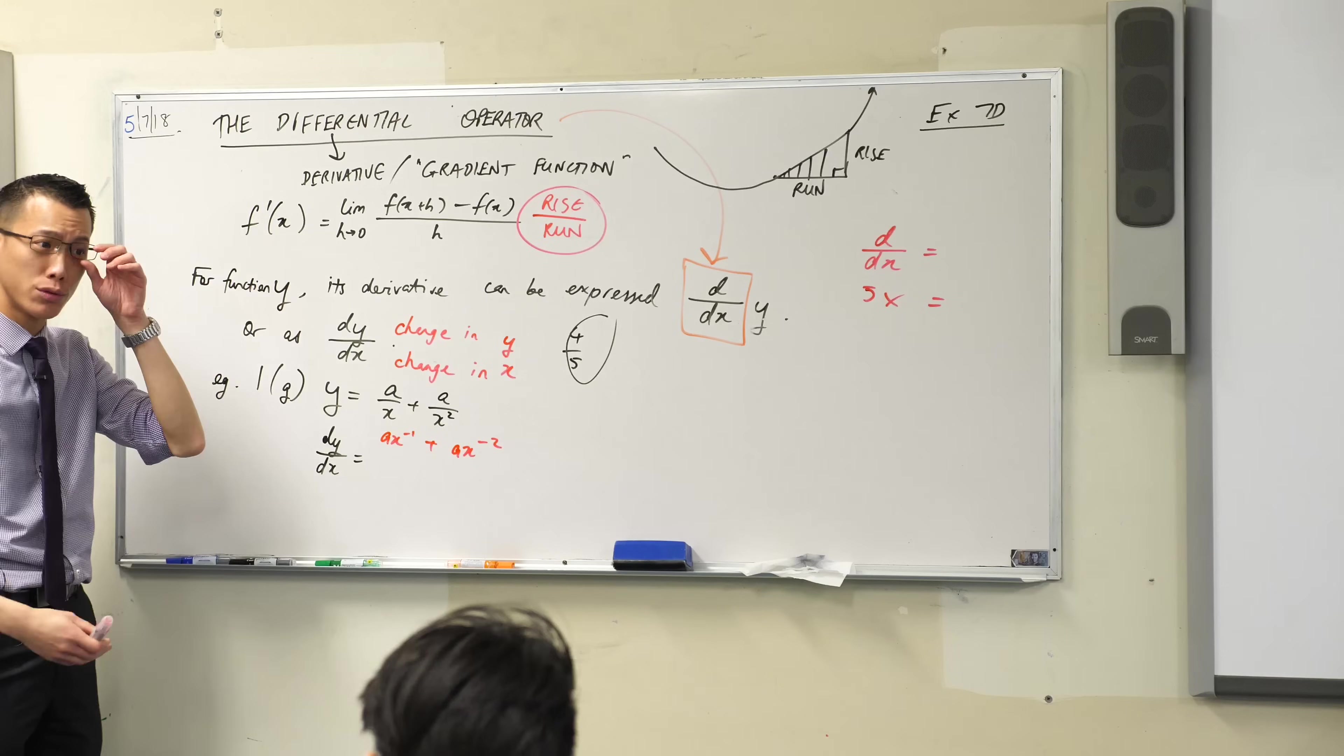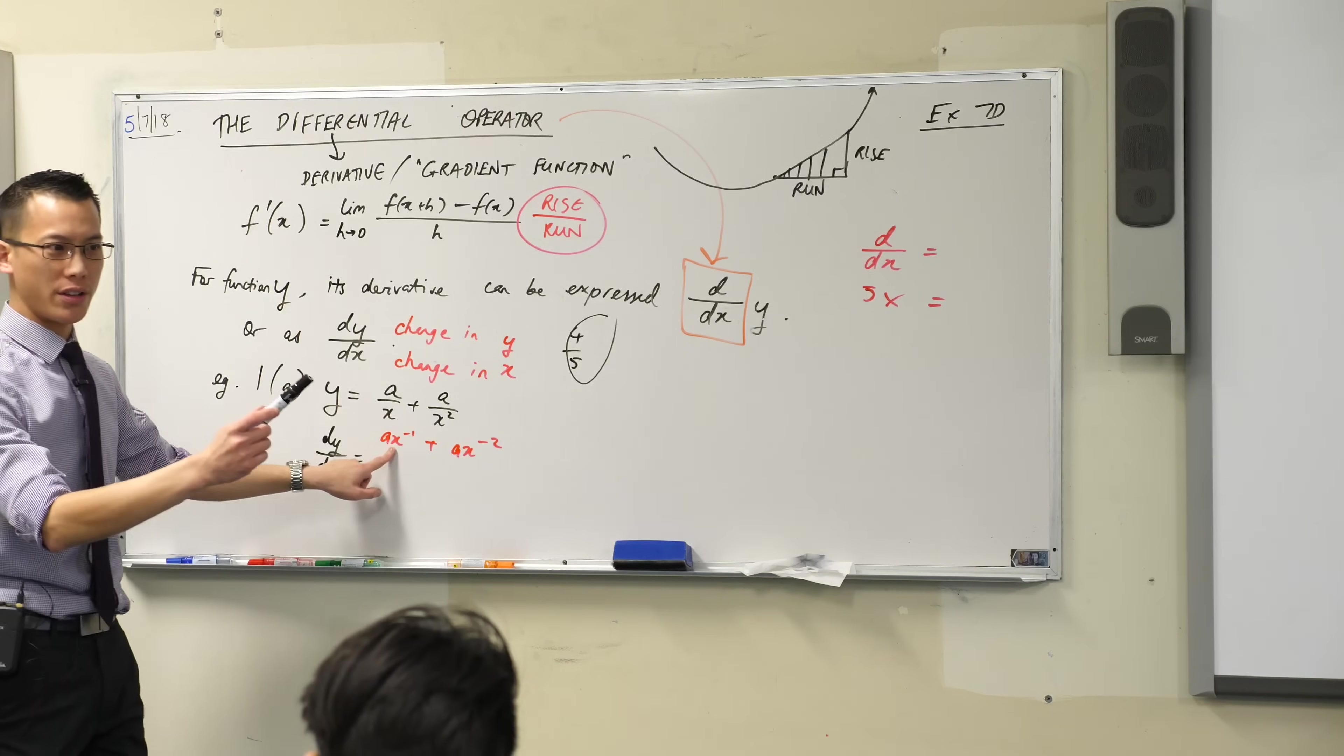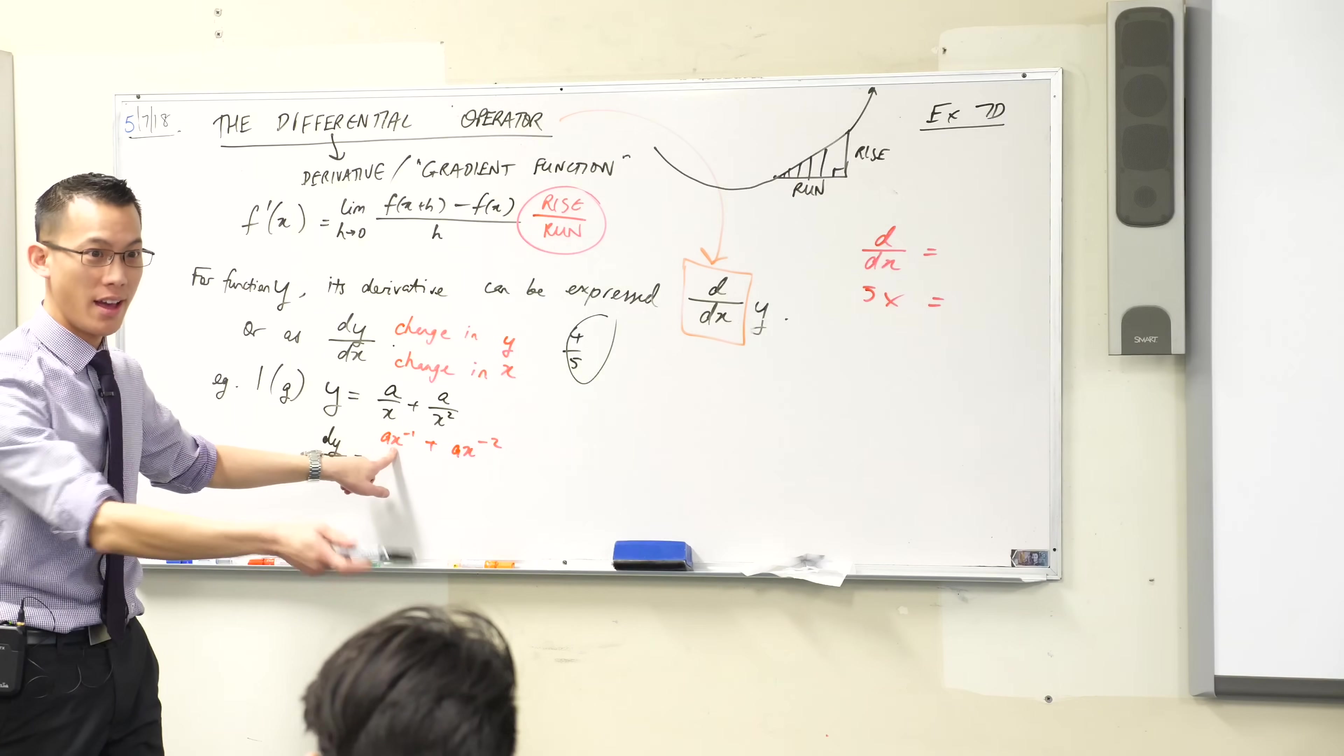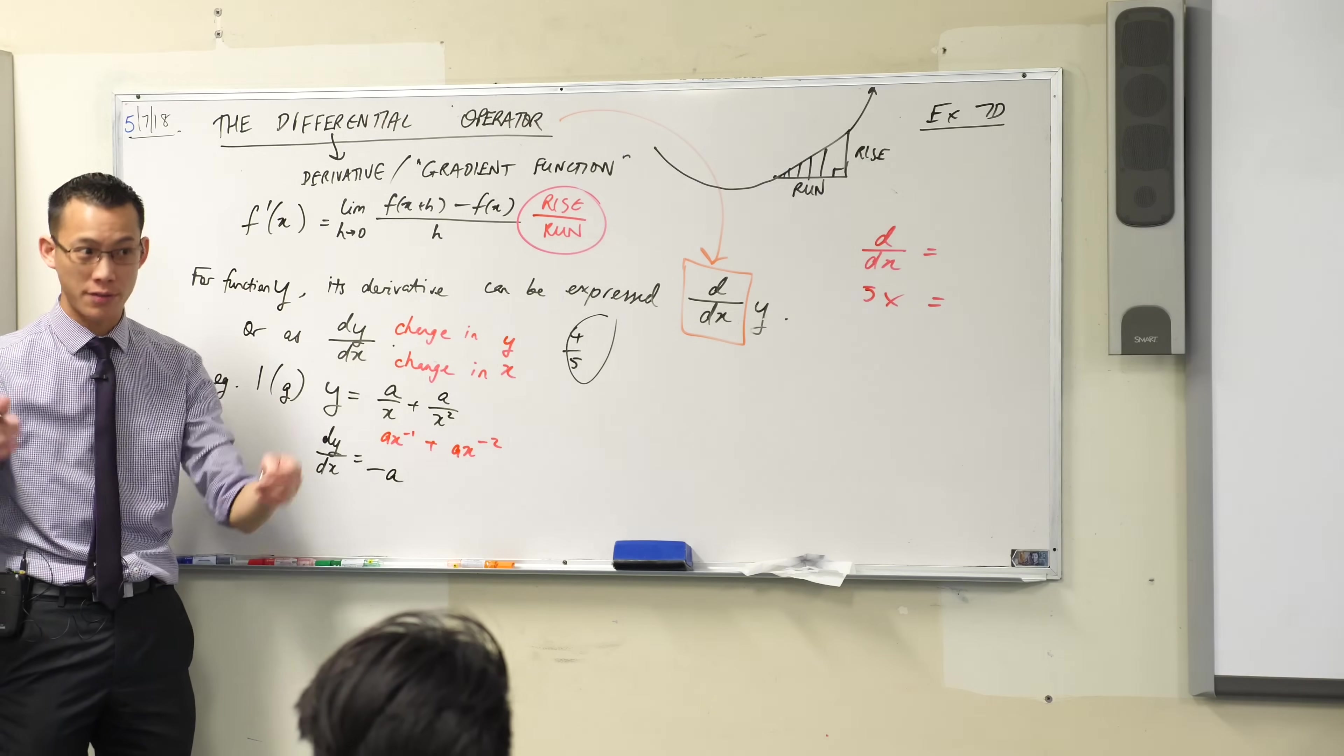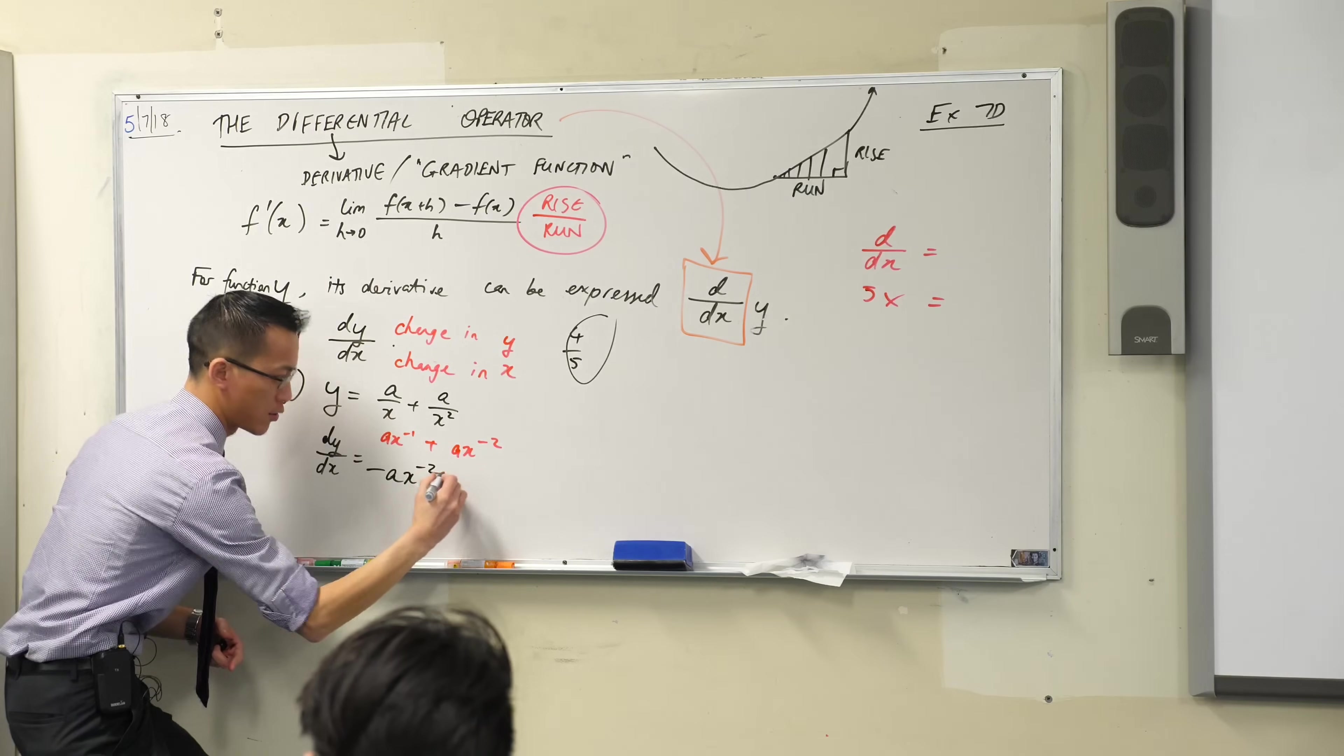So this I can just apply my rules of differentiation to, right? I can say this guy here, I'm going to, come on, you guys can tell me what to do with the negative 1. What's going to happen to it? It's going to, I'm going to multiply the whole thing by the current power. Negative a. And then what happens to the power after I've done that? It reduces by 1. So this is going to become x to the negative 2.